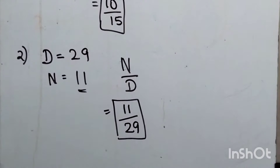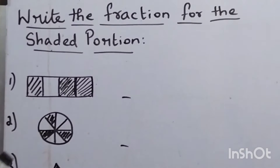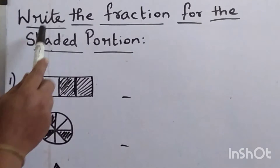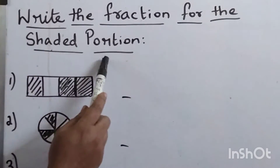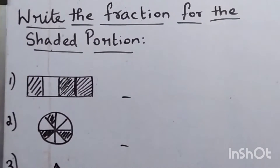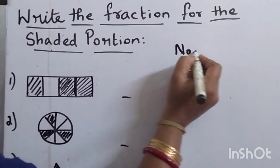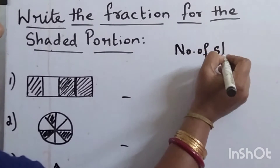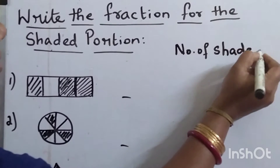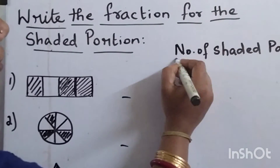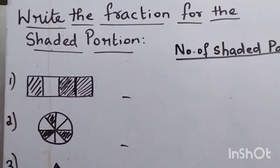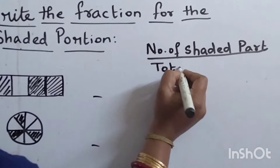Children, let's move into today's topic — write the fraction of the shaded part and the unshaded part. We write it as: number of shaded parts divided by total number of portions.